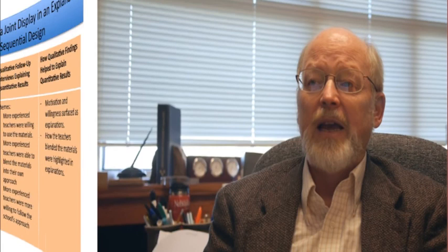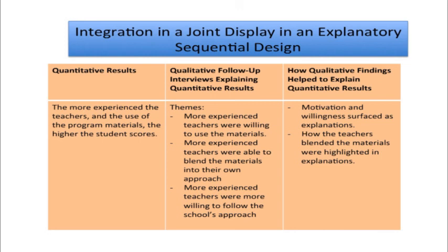Joint displays can thread through all different types of designs. In an explanatory sequential design joint display, the first column shows quantitative results — for instance, that more experienced teachers using program materials yield higher student scores. The second column shows qualitative follow-up interview findings about teachers' experiences using the materials. The final column shows how the qualitative findings help explain the quantitative results. This is a joint display set up specifically for an explanatory sequential design.